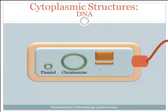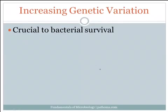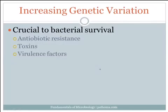Plasmids are very important because they're easily transmitted from one bacterium to another, and they play a key role in increasing genetic variation amongst bacteria. This is crucial to bacterial survival because the genes that bacteria trade from one to another can contain antibiotic resistance properties, code for toxins, code for virulence factors such as flagella, pili, and capsules — some of the virulence factors we talked about earlier — and just a number of things that can help bacteria survive better in a hostile environment.